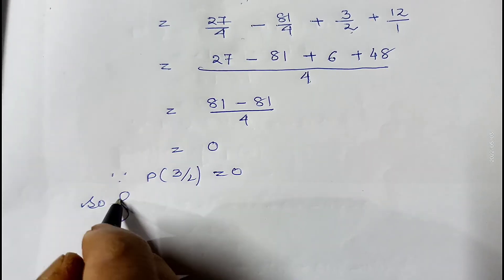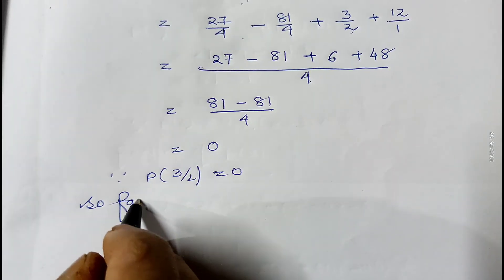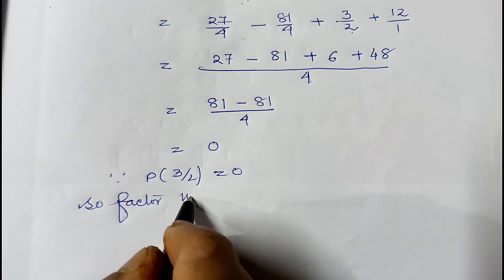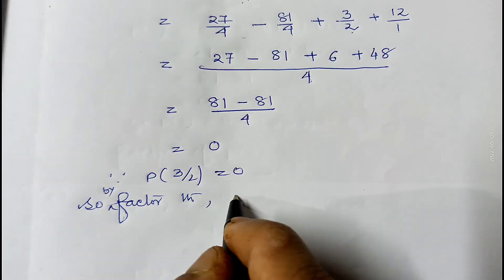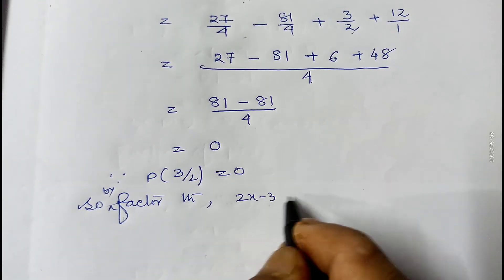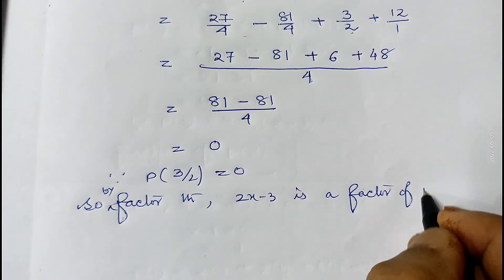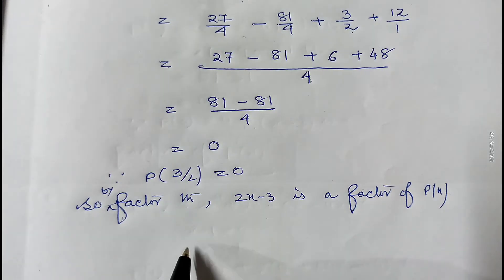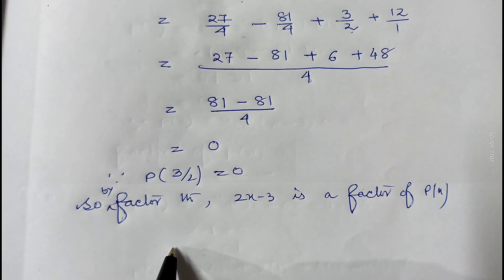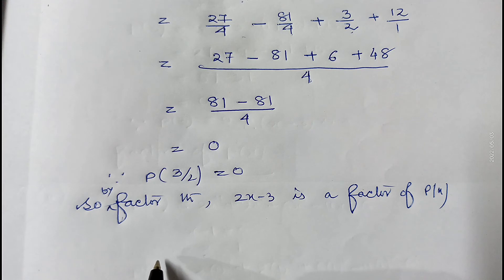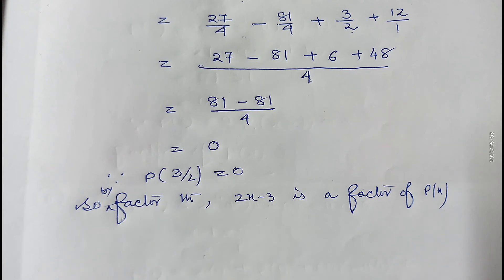Therefore both x plus 1 and 2x minus 3 are factors of the given polynomial. Hence proved. I hope the factor theorem and the sums of Exercise 2D are now clear. That's all for today. In the next video I'm going to start Exercise 2E. Till then, bye bye, take care and wait for the next part.